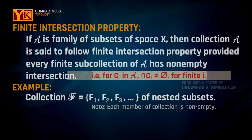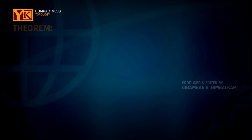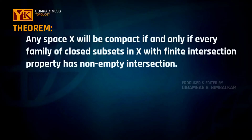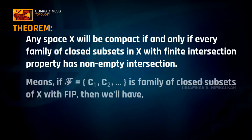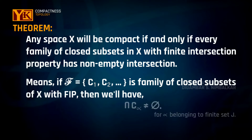Now we will see the theorem: the space X is compact if and only if every family of closed sets in X with the finite intersection property has non-empty intersection. This means if F is any family of closed sets with the finite intersection property, then the intersection of all C-alpha, where C-alpha belongs to F, must be non-empty.